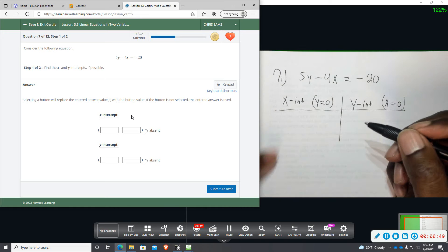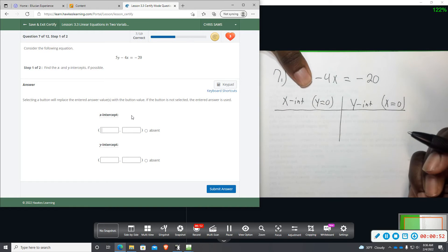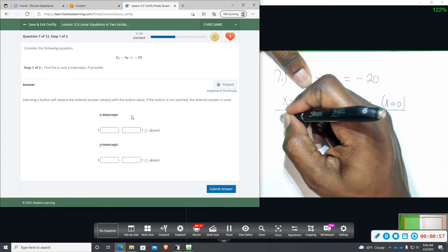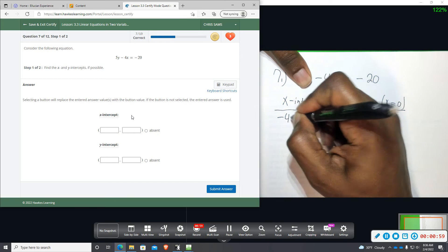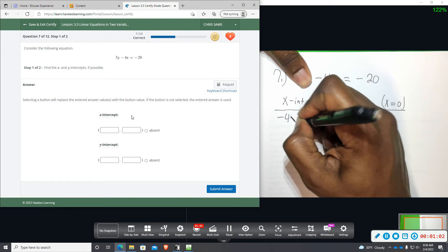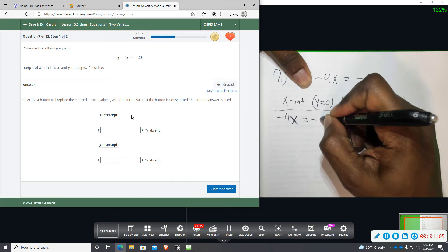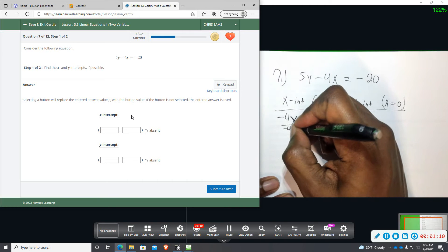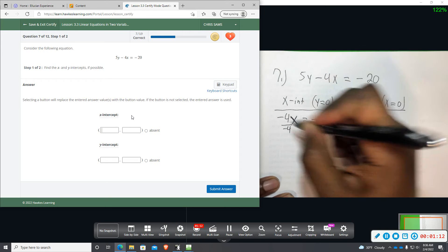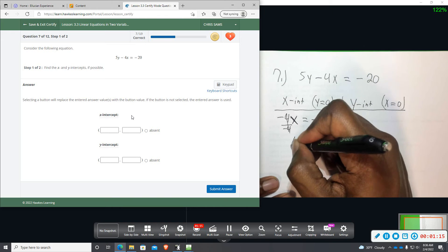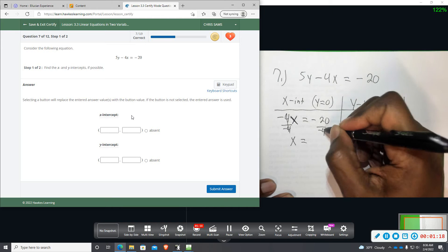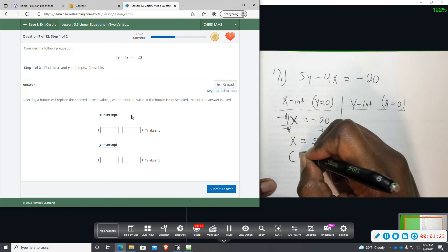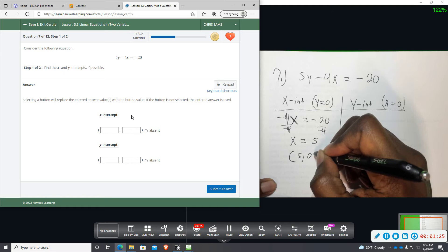So when y is 0, we're going to plug in the 0, and we're going to lose that y term, so the remaining equation is going to be negative 4x equals negative 20. And then we're going to solve for x divided by negative 4 on both sides. Negative 4 divided by negative 4 is 1, so that term is gone. And then negative 20 divided by negative 4 is a positive 5. So our ordered pair, x is 5, y is 0.